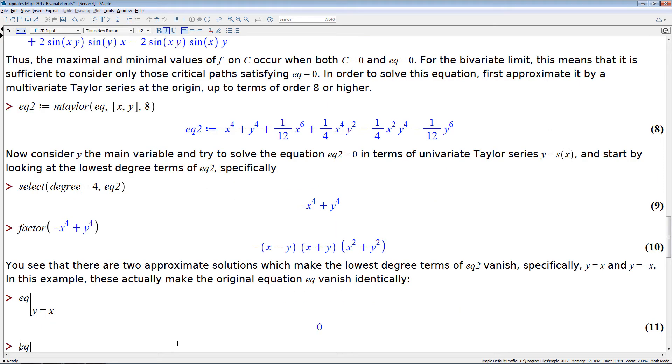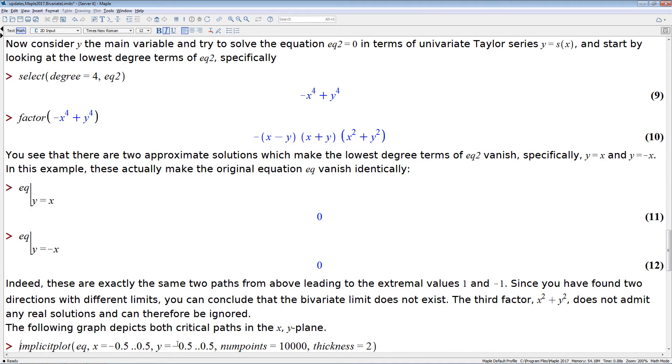Those are exactly the two critical curves that we had before. And we can see that those, what we computed so far, are approximate solutions, but those are actually exact solutions to our critical equation. And the remaining solution where x squared plus y squared equals 0 is not real, so we can ignore it.